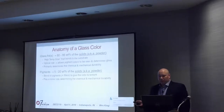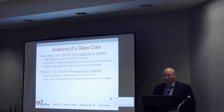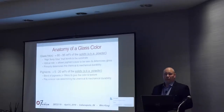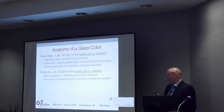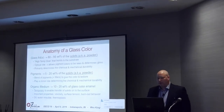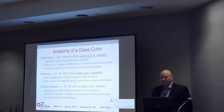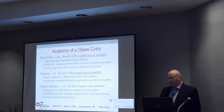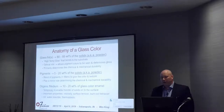Pigments are very important because they give you the color. They're typically 5 to 28 percent of the solids. Usually you're using more than one pigment—there's a blend, and sometimes other fillers are put in to adjust color or texture, because not every decoration is a glossy finish. Sometimes people want a semi-matte, satin, or something that looks more like chalkboard. Pigments can play a minor role in chemical and mechanical durability. The organic medium, which is 10 to 28 percent of the total weight of a ready-to-use product, is necessary to transfer the powders to the surface.